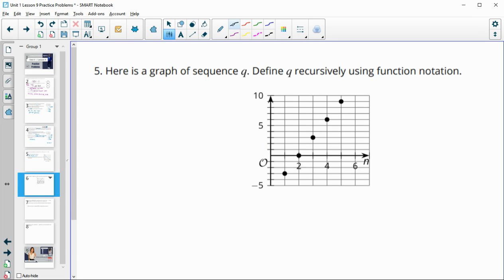Number five, here's a graph of a sequence. Define it recursively. So we want to come up with the first term. So we want to define the a sub 1 term. So the a sub 1 term is here at negative 3. Then we want to look at what's happening to each term. So we're going to take the previous term and do what? We can see that it's linear, so we just have to see how much it's going up each time.